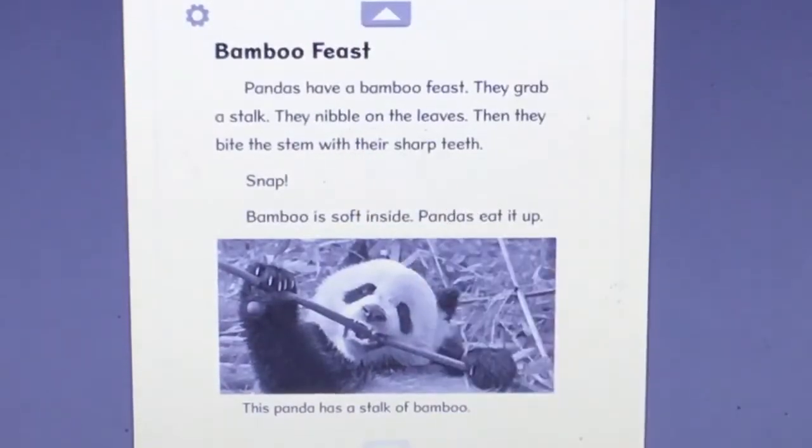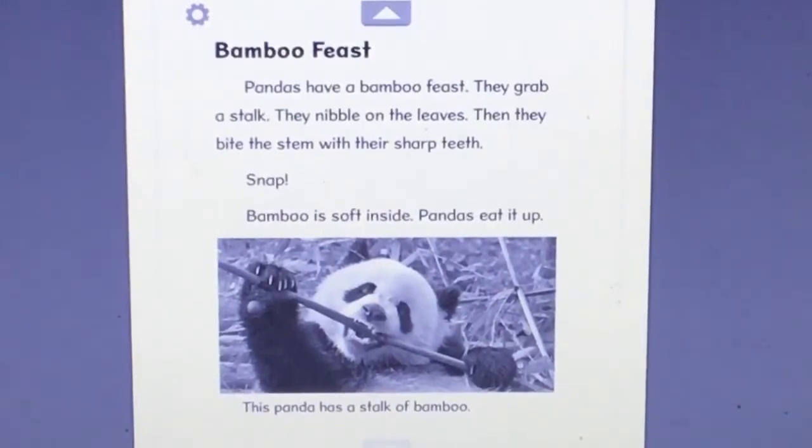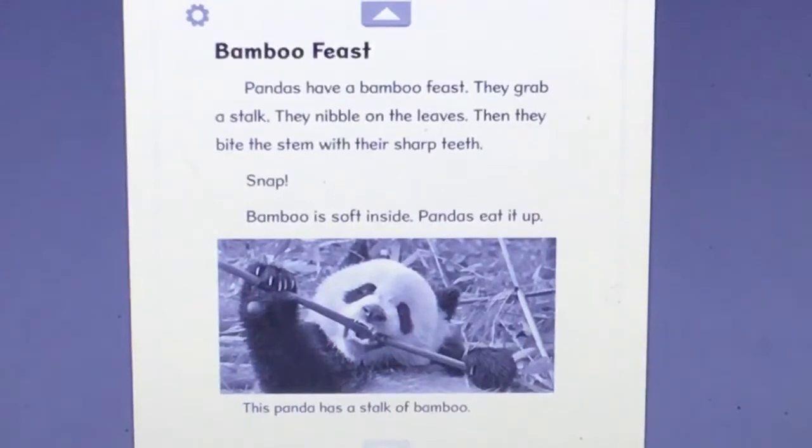Bamboo feast. Pandas have a bamboo feast. They grab a stalk. They nibble on the leaves. Then they bite the stem with their sharp teeth. Snap! Bamboo is soft inside. Pandas eat it up. This panda has a stalk of bamboo.